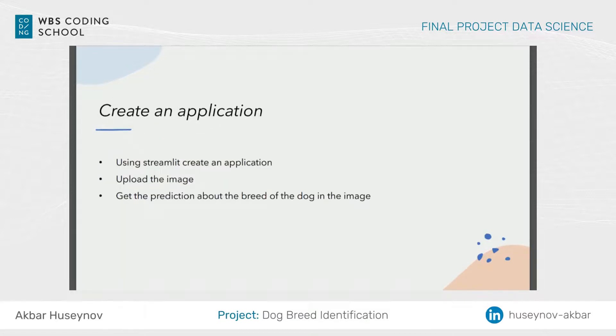After fitting the model and about 50 iterations later, I reached a satisfactory level of accuracy and saved it for future use in the app, which I created using Streamlit.